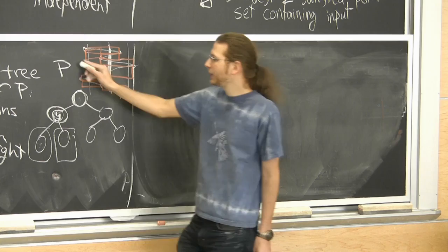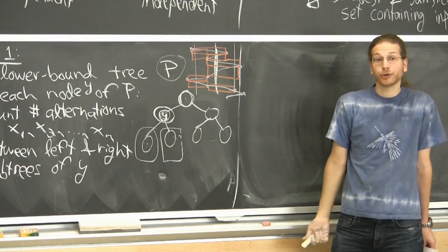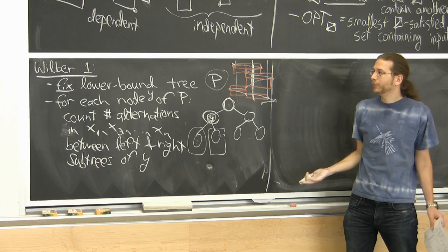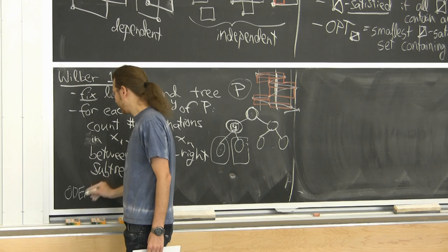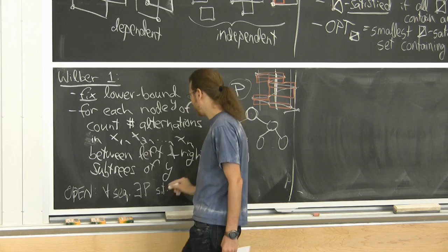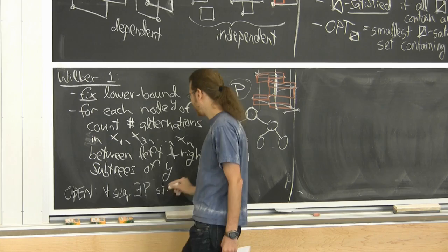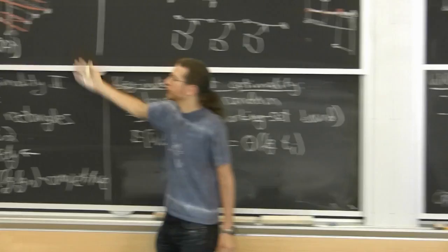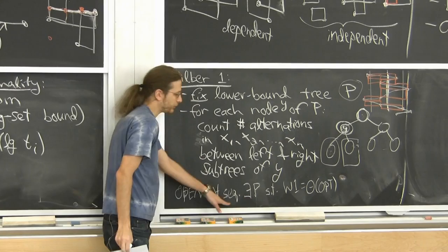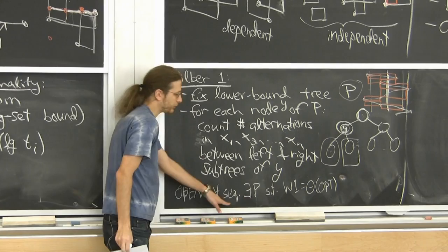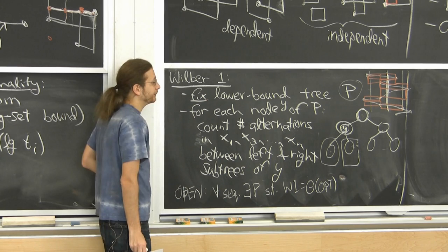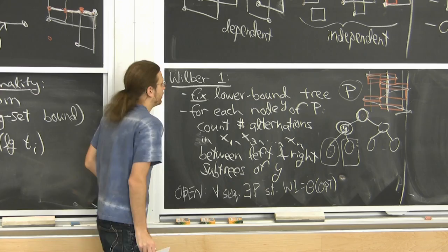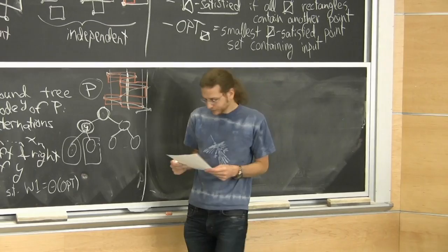Wilbur 1 is also an independent rectangle lower bound — the corresponding rectangles are independent. It's a little weird because it depends on the choice of tree P. You could choose a perfect tree, or a different tree, and get a different lower bound each time. Taking the max over all trees gives the biggest Wilbur 1 lower bound. For tango trees we'll use the perfect tree, which has height log n.